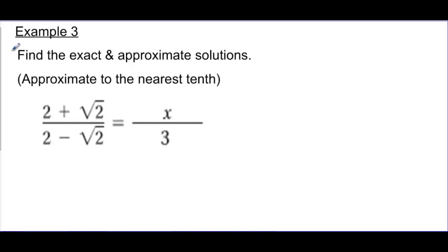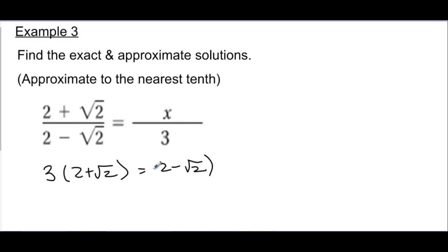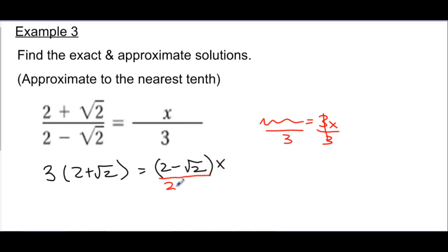One more example — a very similar concept. I have a proportion, and when I'm solving this proportion I'm going to cross multiply. So I would cross multiply (2 plus the square root of 2) being multiplied by the denominator here of 3, giving 3 times (2 plus the square root of 2). That's going to be equal to (2 minus the square root of 2) times x. I'm not going to distribute that x because my job is to get x alone. So what I'd really like to do instead is divide away this (2 minus the square root of 2). If it was 3x equals something, I would divide both sides by 3 to get rid of the 3 — I'm doing the same thing here with a more complicated-looking expression.